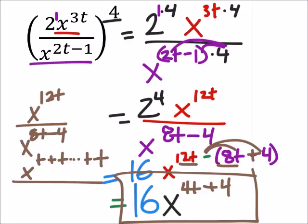So plus t, and then 8 of those. And then I would have to multiply that by x to the power of negative 1 times x to the power of negative 1, four of those.